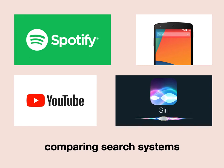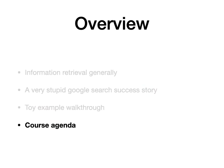Think about the sheer number of these kinds of systems you use. YouTube is unstructured data that is highly searchable. The search bar on your phone, Siri, Google Assistant, Spotify — we have all kinds of search engines in our lives that we use every single day. The idea is we're going to understand these systems a whole lot better by the end of the course. We'll be able to make a rudimentary but fully searchable system.